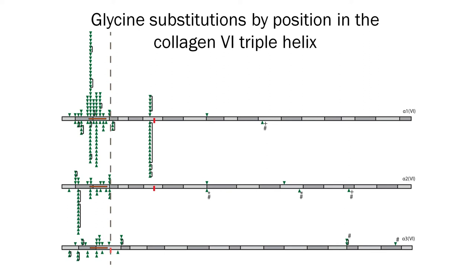Within the region N-terminal to the 17th triplet, Pace et al. in 2008 proposed a critical region spanning triplets 10 to 15, marked here by an orange bar. This region is correlated with a more severe disruption of assembly and increased clinical severity. In our cohort, 59% of glycine substitutions occur in this critical region, accounting for only 5% of the length of the triple helical domain.